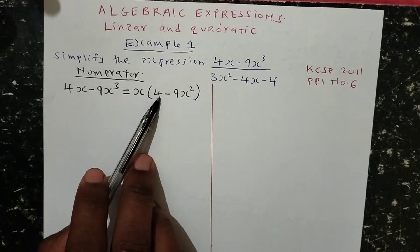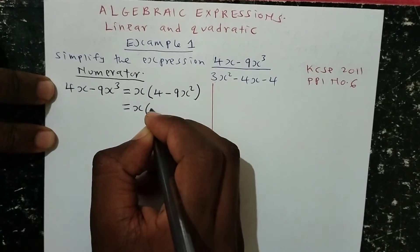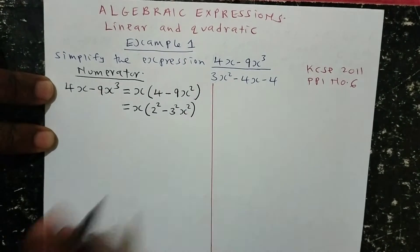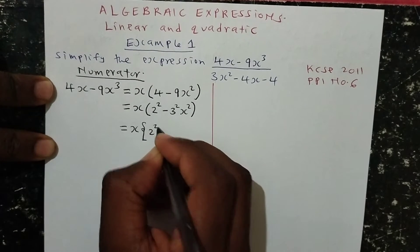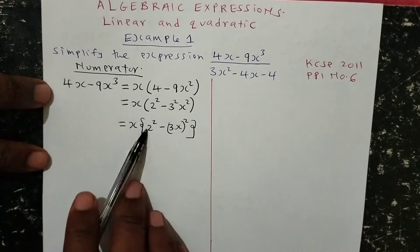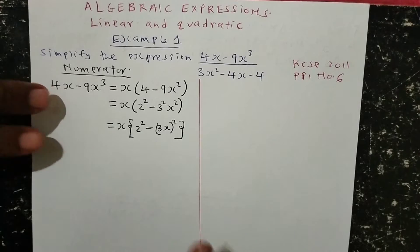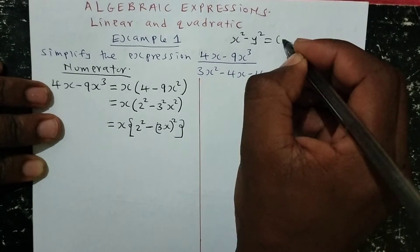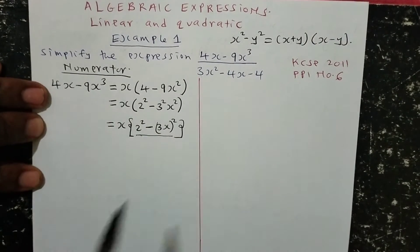Now you can see 4 can be made into 2 squared, and 9 can be made into 3 squared, so that we can obtain a difference of two squares. This is the same as saying x into 2 squared minus 3 squared times x squared, which gives us x into 2 squared minus 3x squared. This is exactly what we call the difference of two squares. We have a property which states that whenever you have x squared minus y squared, it is simply the same as x plus y, multiplied by x minus y.